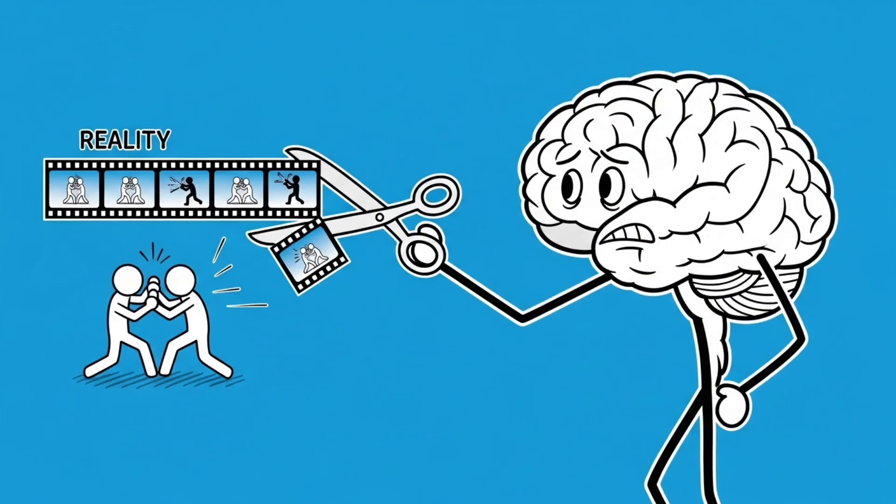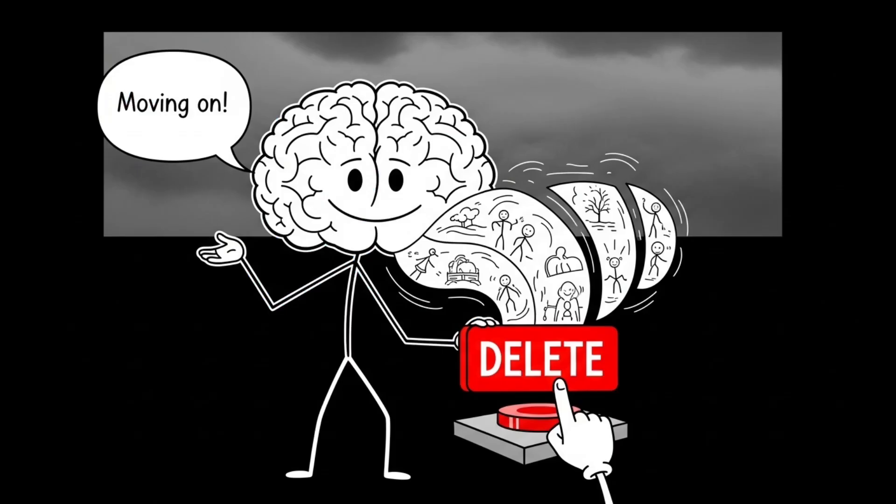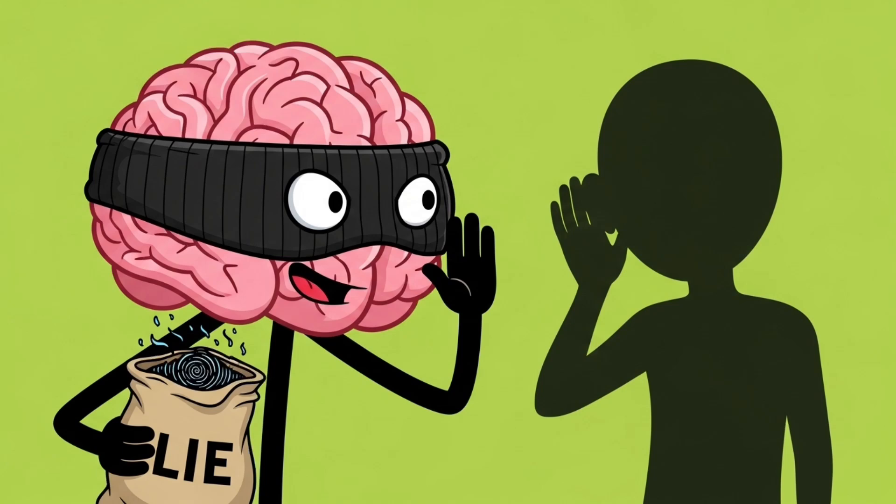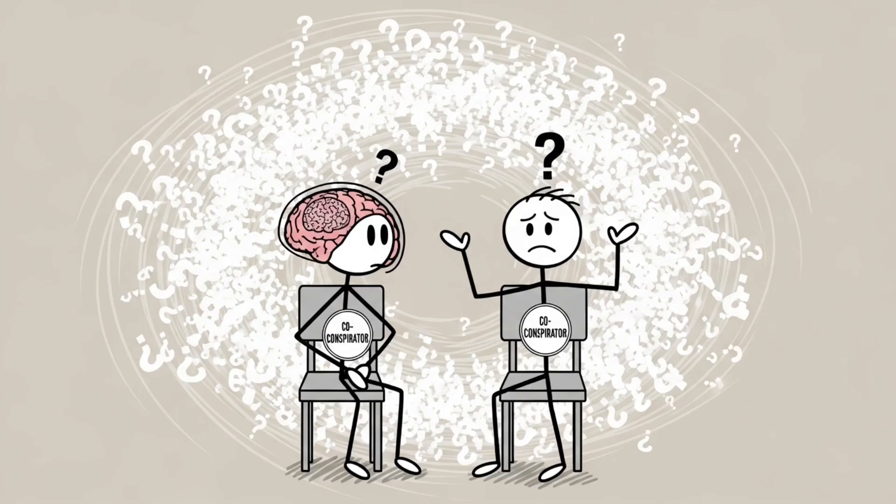Your brain doesn't like conflict. So instead of confronting the lie, it just edits reality. Like, eh, maybe they're right, let's delete that part and move on. In other words, your brain isn't just a victim of lies, it's an accomplice, a willing co-conspirator in your own confusion.